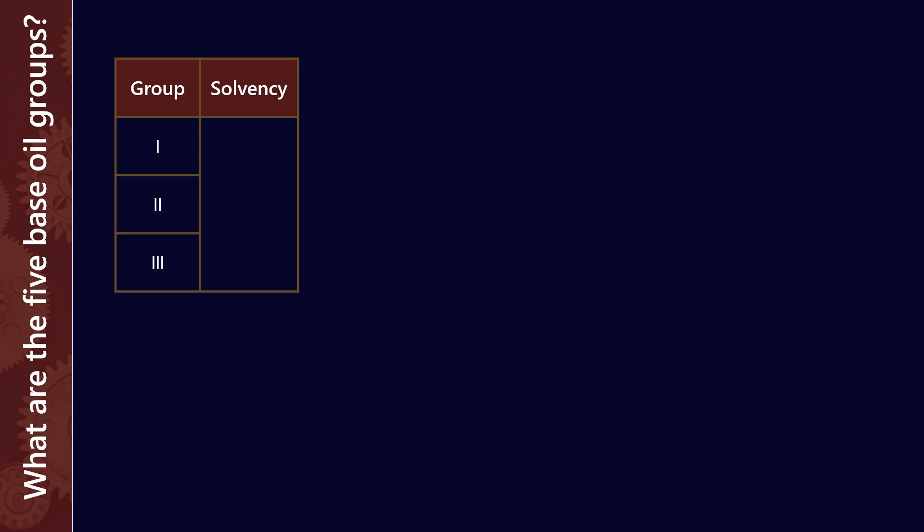This is a really interesting one. Solvency is highest for group 1, and the reason is because solvency is a measure of the polarity of all the molecules within the base oil. Group 1 base oils have the most polar molecules. So especially all those aromatics, they are highly polar. And that helps with solvency. Now solvency is important for two reasons. First, because you need a certain amount of solvation to be able to get your additive package to go into solution within the base oil.